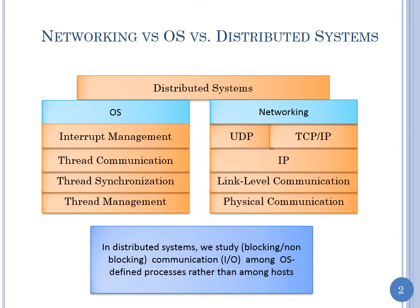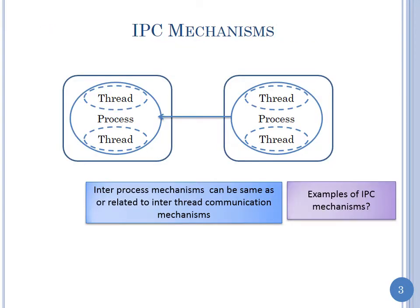Networking involves distributed communication and distributed systems also involve distributed communication. The difference is that in networking we communicate host-to-host, whereas in distributed computing we communicate process-to-process using some IPC mechanism — a mechanism for inter-process communication.